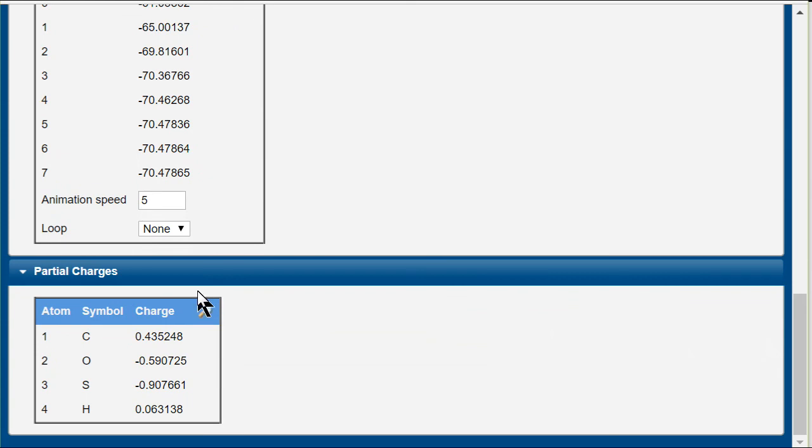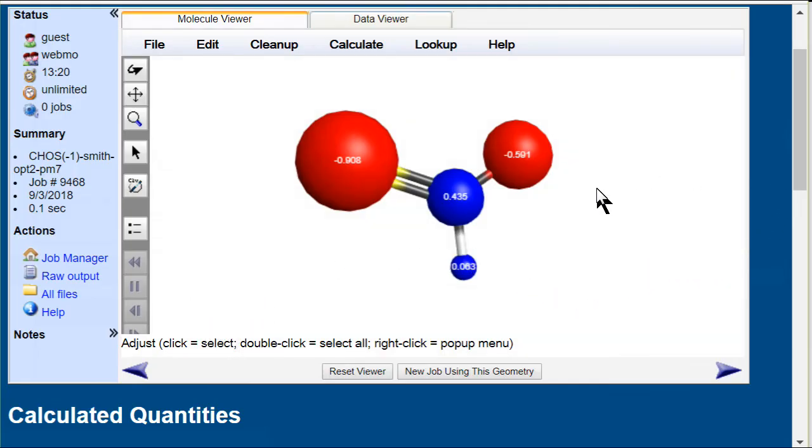And looking at the partial charges, we see they are indeed shared between sulfur and oxygen with the same values that were on the other formulas.